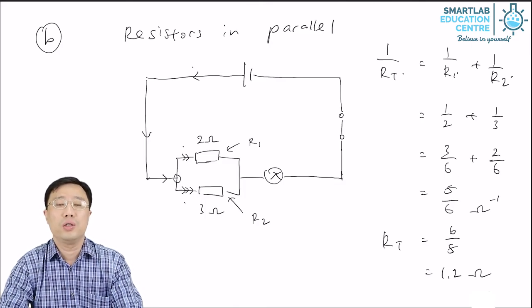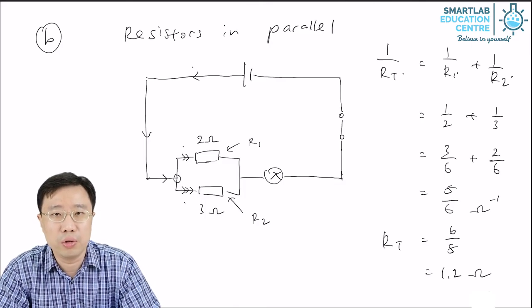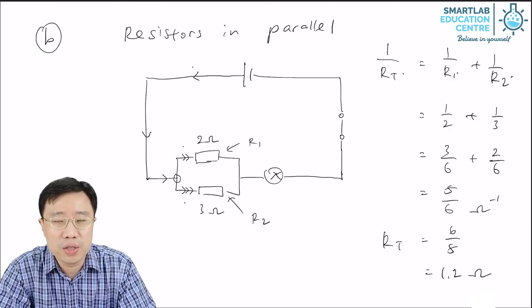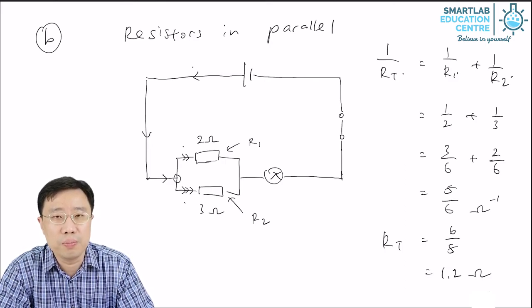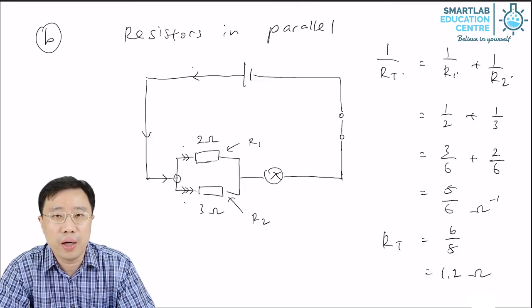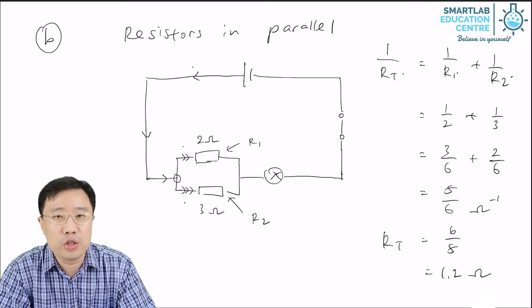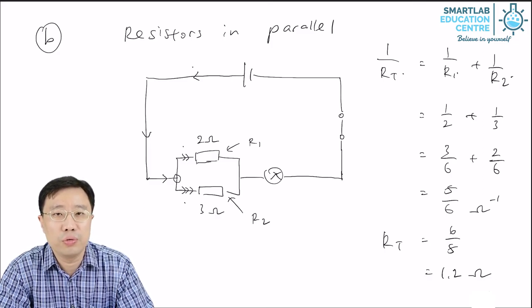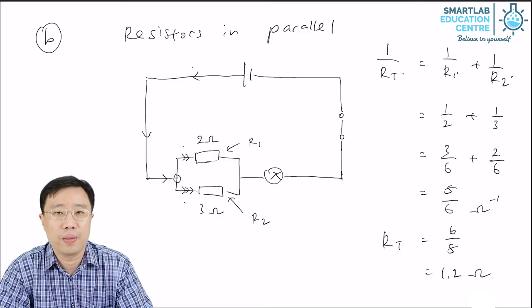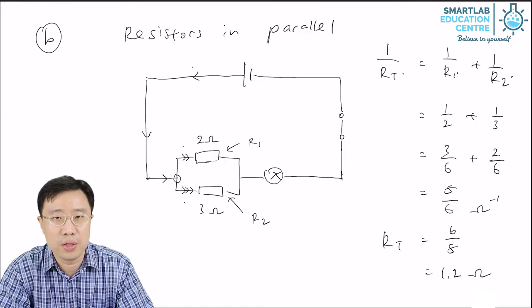So this is something that you need to take note of. When you calculate the total resistance of resistors in parallel, your answer has to be smaller than each of the individual resistance. This is how you check whether your answer is correct.